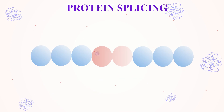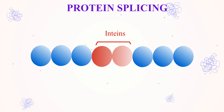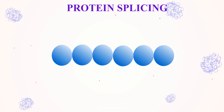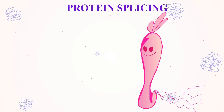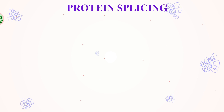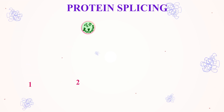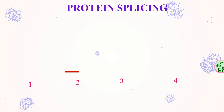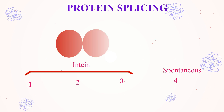Protein splicing is a process by which particular segments of protein, called inteins, are removed from the protein while joining the exteins together. Protein splicing is exclusively found in unicellular organisms, particularly in pathogenic microorganisms. It occurs via four independent intramolecular reactions, in which the first three reactions are catalyzed by the intein at a single site, and the final reaction is spontaneous.